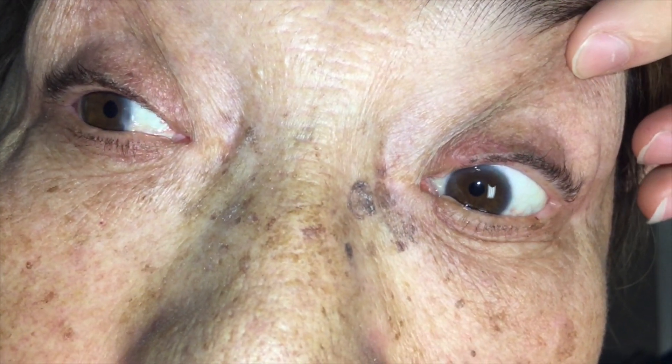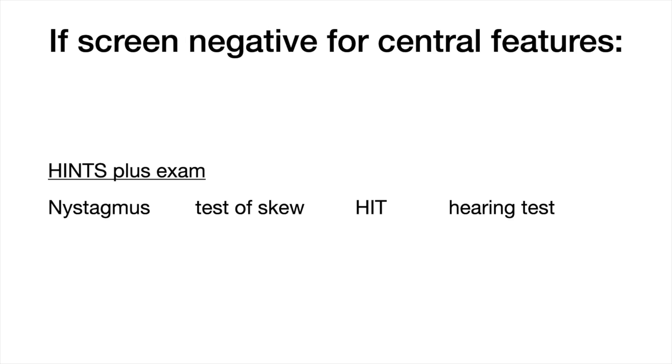Remember that positional vertical upward nystagmus is seen during the Dix-Hallpike test, as in a patient with posterior canal BPPV. If you find any central features in your patient with acute vestibular syndrome, then the HINTS-Plus exam is basically irrelevant because you should work them up for stroke. But if they screen negative, as most patients will, you still can't say for sure that it's only vestibular neuritis unless you perform the four components of the HINTS-Plus exam.